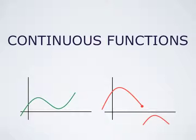A continuous function cannot change from being negative to being positive without taking the value zero in between. More generally, a function which is continuous on an interval takes any value between any two of its values. This is called the intermediate value theorem.